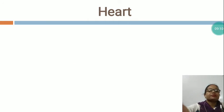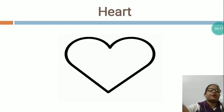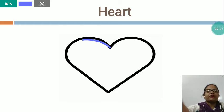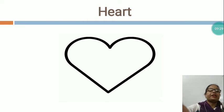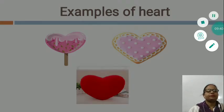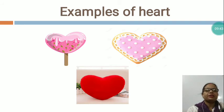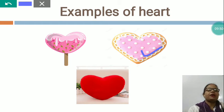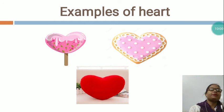Now the next is HEART. You can see this is heart shape. We draw the heart shape like this. Now I would like to show you some examples of heart shape. These all are the examples of heart shape. Have you seen, children? Candy — which shape? Heart shape. Now this is a cookie — which shape? Heart shape. And this is a cushion — which shape? Heart shape. These all are the examples of heart shape.